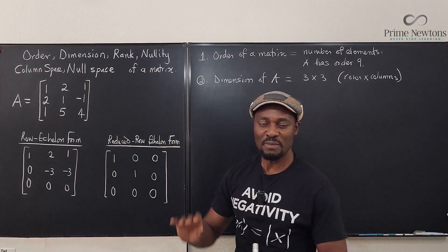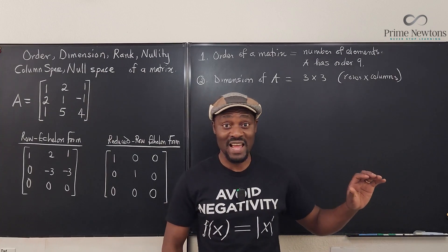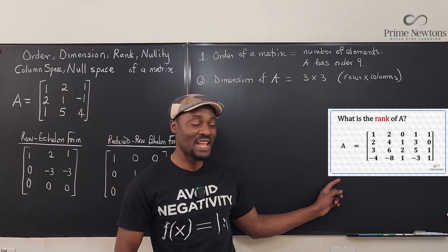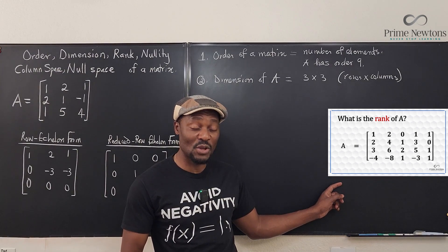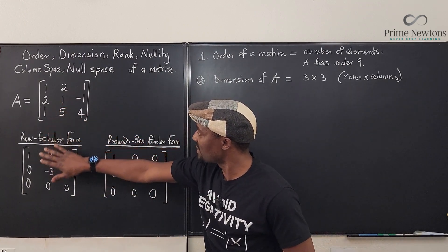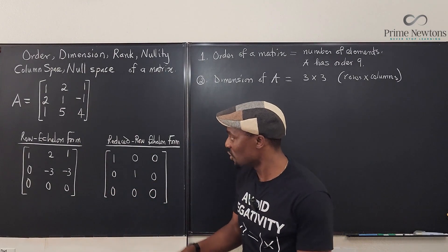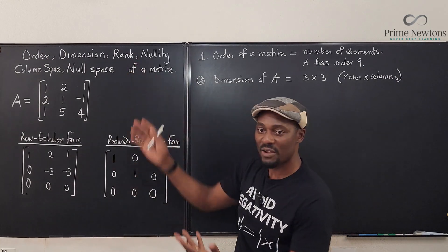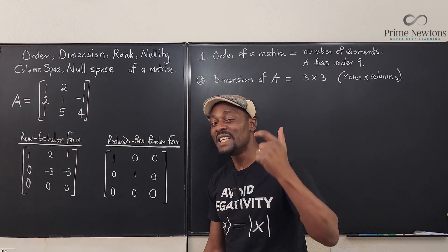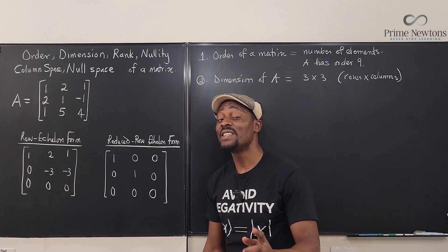What is the rank of a matrix? I don't want to waste time finding the rank because I already did that in another video — I'll put the link in the description. We've already expressed this matrix in row echelon form and reduced row echelon form in earlier videos. So what is the rank of this matrix? The rank is actually the number of linearly independent columns. This is important.